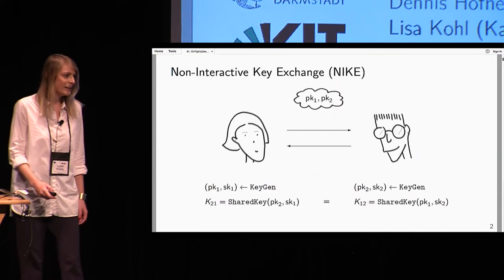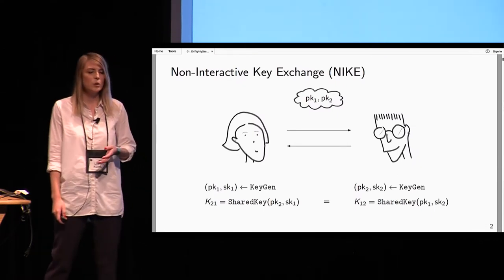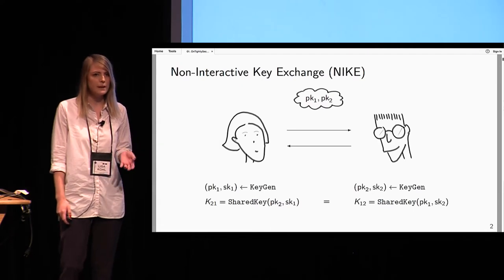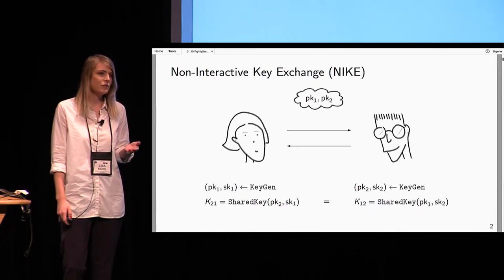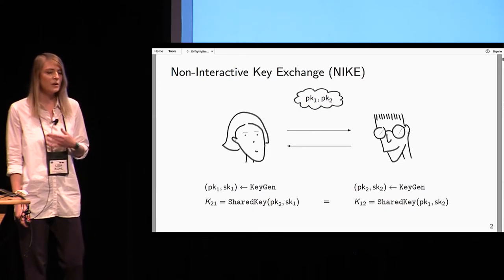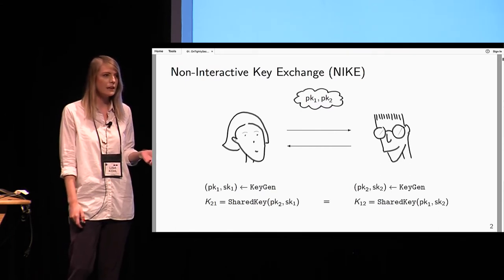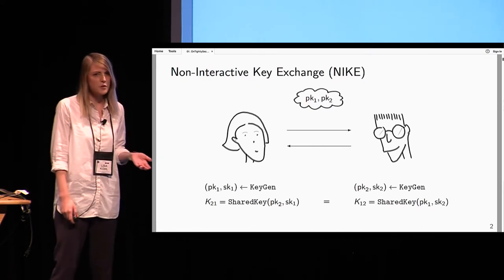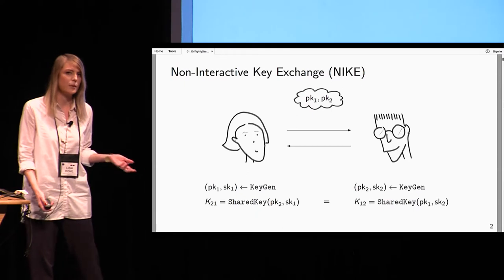Let's begin at the beginning: non-interactive key exchange. We have Alice and Bob who want to establish a secure channel. They can do so by generating a public key/secret key pair, publishing the public key, and then at any point in time they can derive a shared key with their own secret key and the other user's public key without any further interaction. Of course we want correctness, so Alice and Bob should derive the same shared key. For security, we want that an adversary seeing both public keys still cannot distinguish a shared key from a random key.